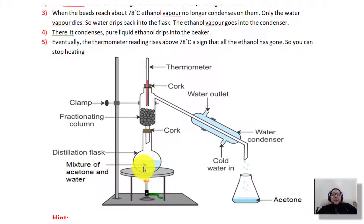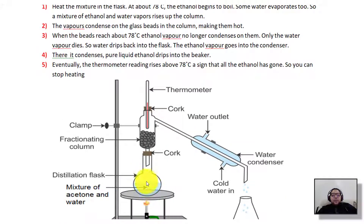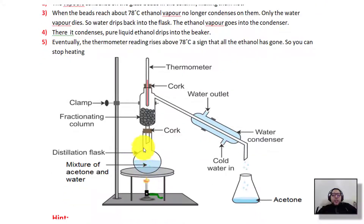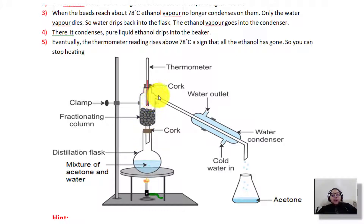When we heat the mixture, we start with the liquid that has the lower boiling point. The boiling point of acetone is 78°C, which is lower than water's. So we heat the mixture to 78°C, and the acetone evaporates — it changes from liquid to gas. The gas moves across the fractionating column, then goes to the condenser inner tube where cold water circulation cools it back into liquid, which is collected.